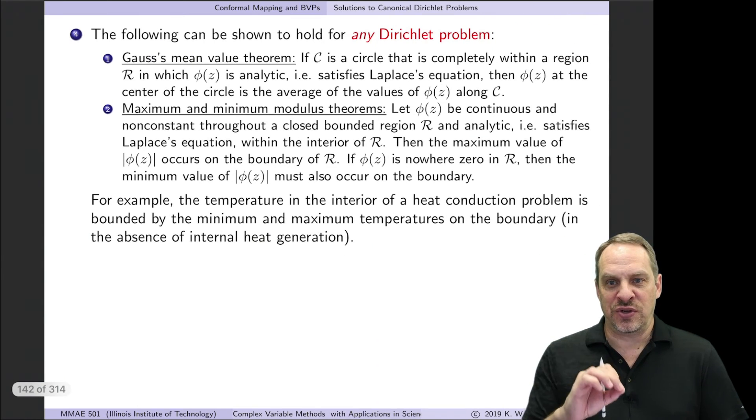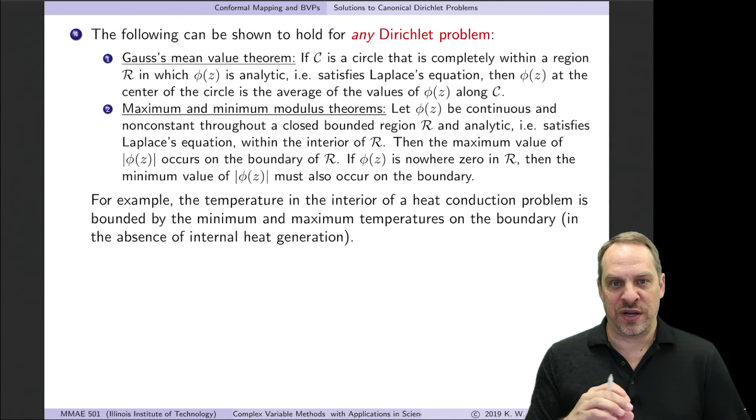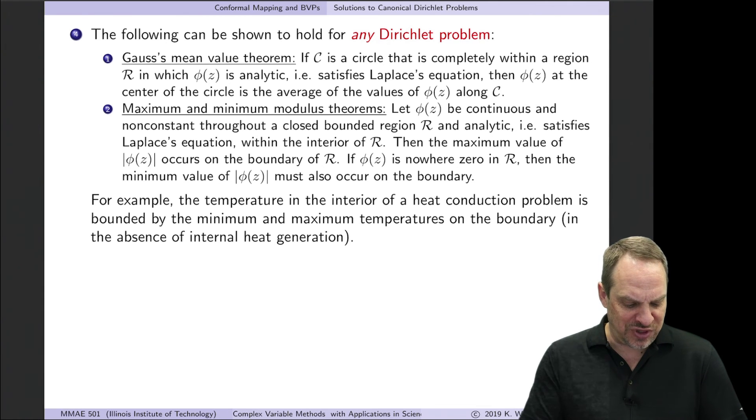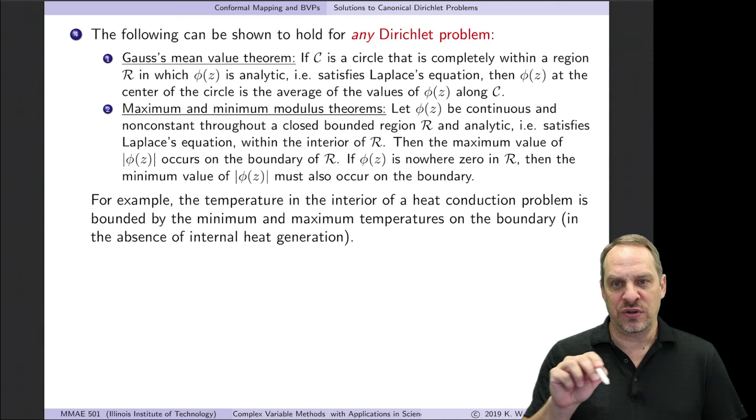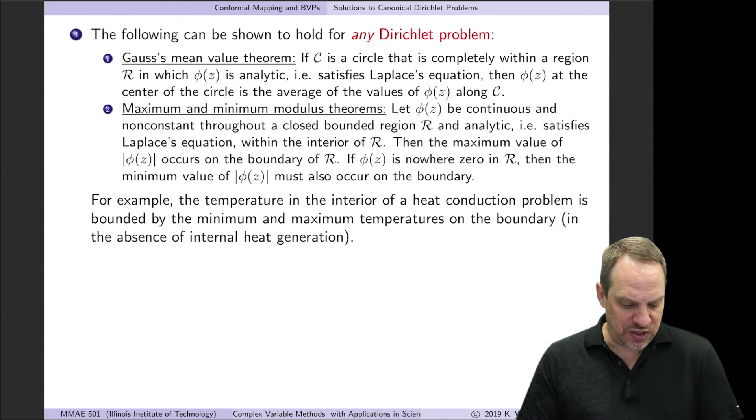There's a couple of interesting mathematical results that you can get from this that actually have an intuitive interpretation that makes sense. These hold for any Dirichlet problem. The first one is known as Gauss's Mean Value Theorem. I have here on the slide the formal mathematical statements of these theorems, but I'll just give you the basic results in layman's terms. Gauss's Mean Value Theorem says the following: if I have a circular domain, if I take the point at the center of the circle, the value of phi at the center is simply the average of the values of phi along the entire circular boundary, which intuitively makes sense.